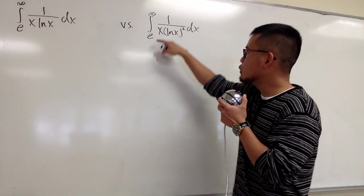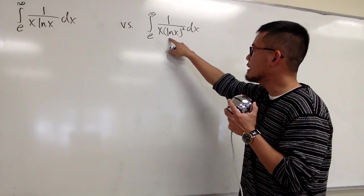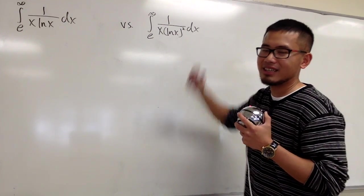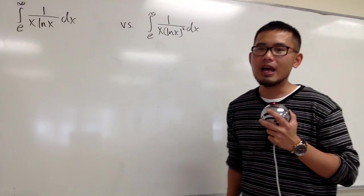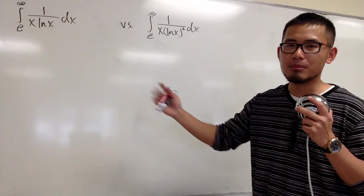And then the second one, the integral from e to infinity, 1 over x times the parentheses with ln(x) inside, and then raised to the second power dx. Which of these actually converges? Why don't you pause the video and give them a try?